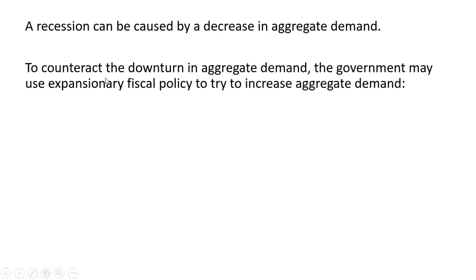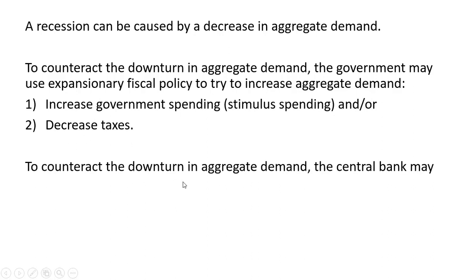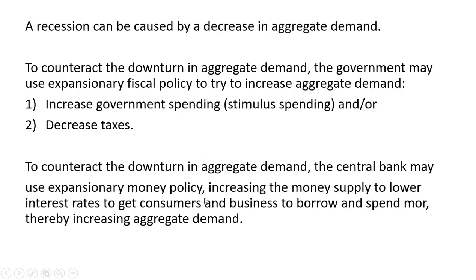A recession can be caused by a decrease in aggregate demand. To counteract the downturn, the government may use expansionary fiscal policy — increasing government spending (stimulus spending) and/or decreasing taxes. The central bank or Federal Reserve may also use expansionary monetary policy, increasing the money supply to lower interest rates, getting consumers and businesses to borrow and spend more, thereby increasing aggregate demand.